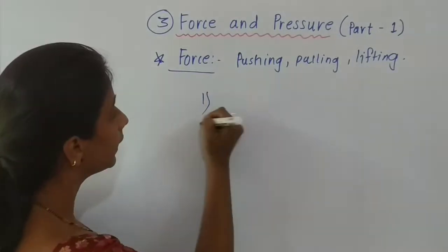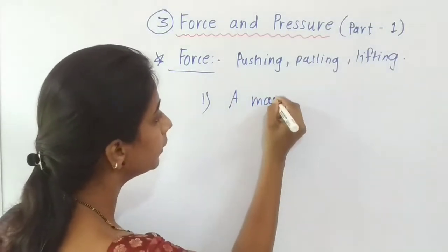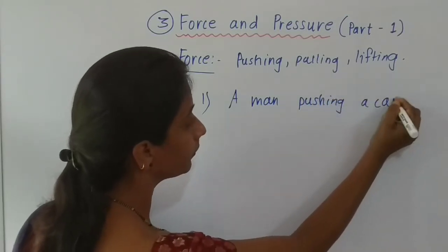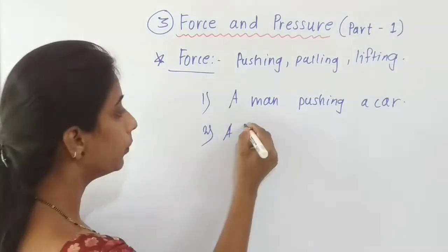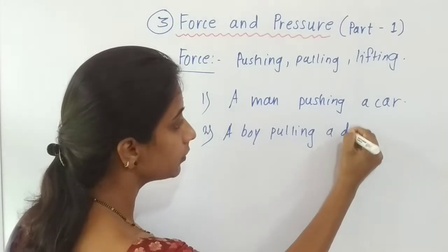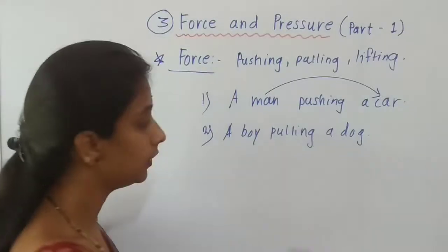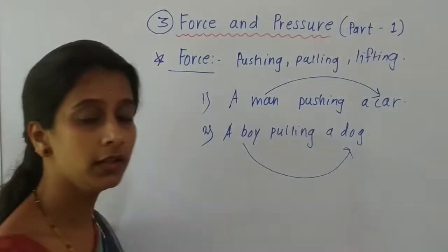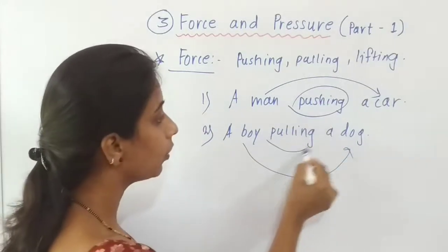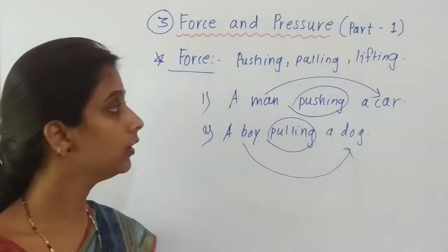Some examples are given in your textbook. The first example is a man pushing a car, and the second example is a boy pulling a dog. In the first example, the man is exerting force on a car by pushing it. In the second example, the boy is exerting force on a dog by pulling it. So force is both pushing and pulling of an object.